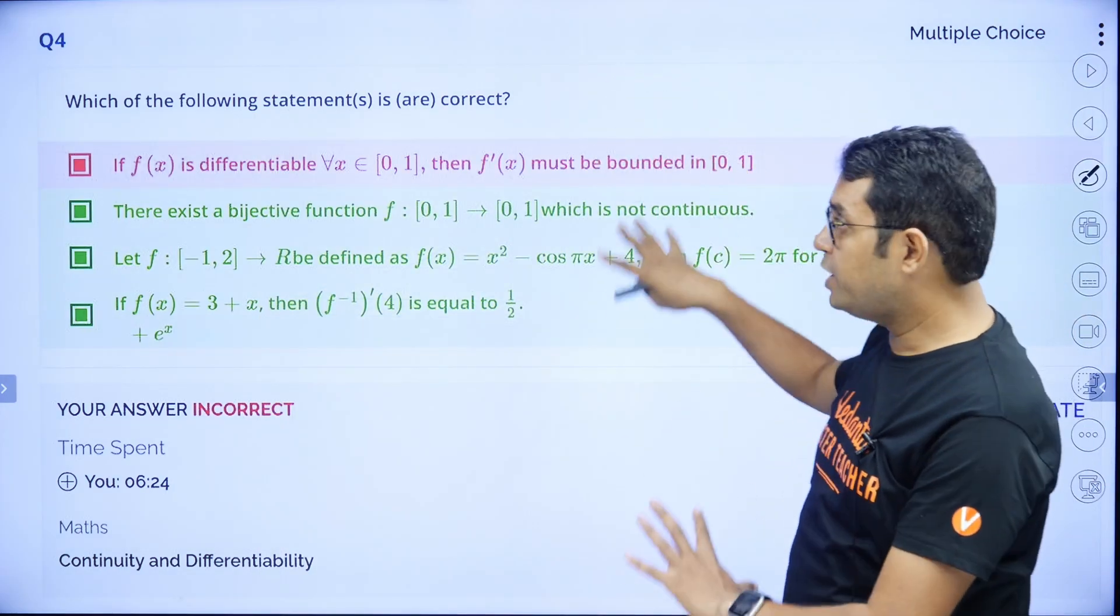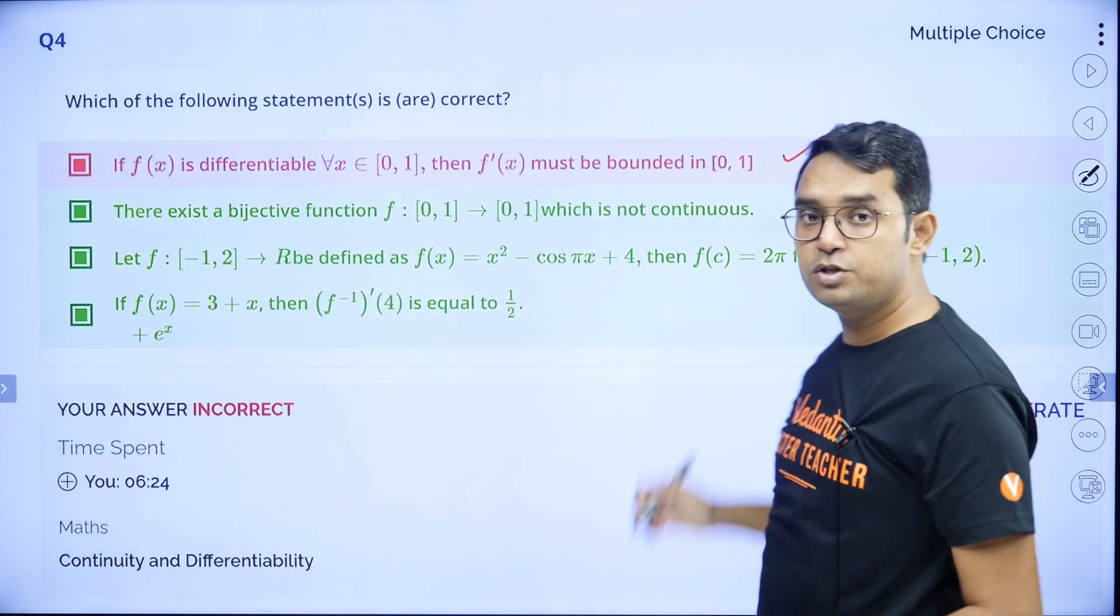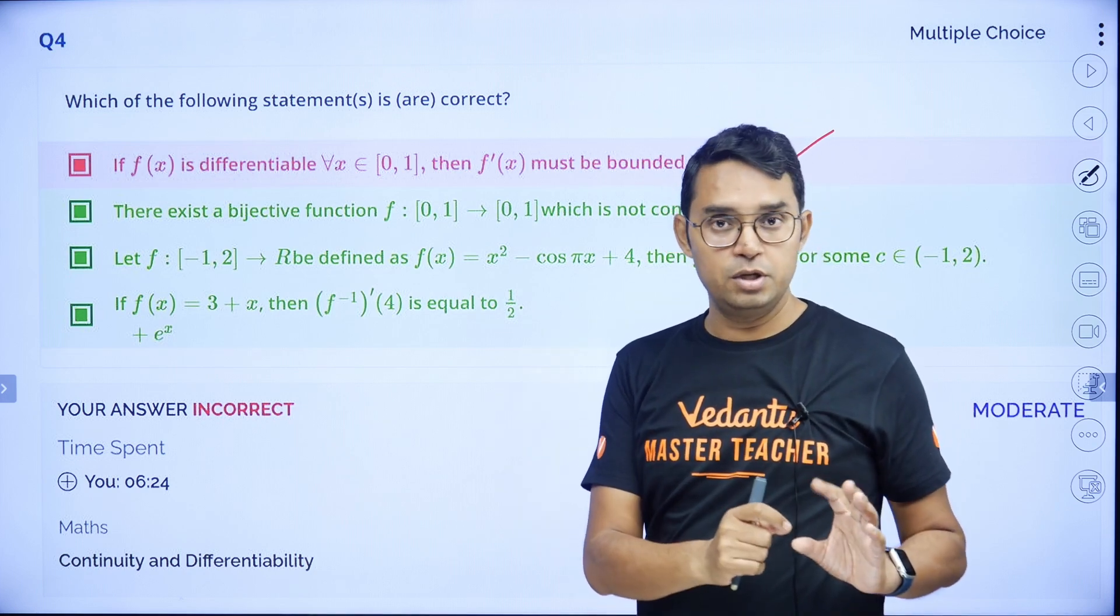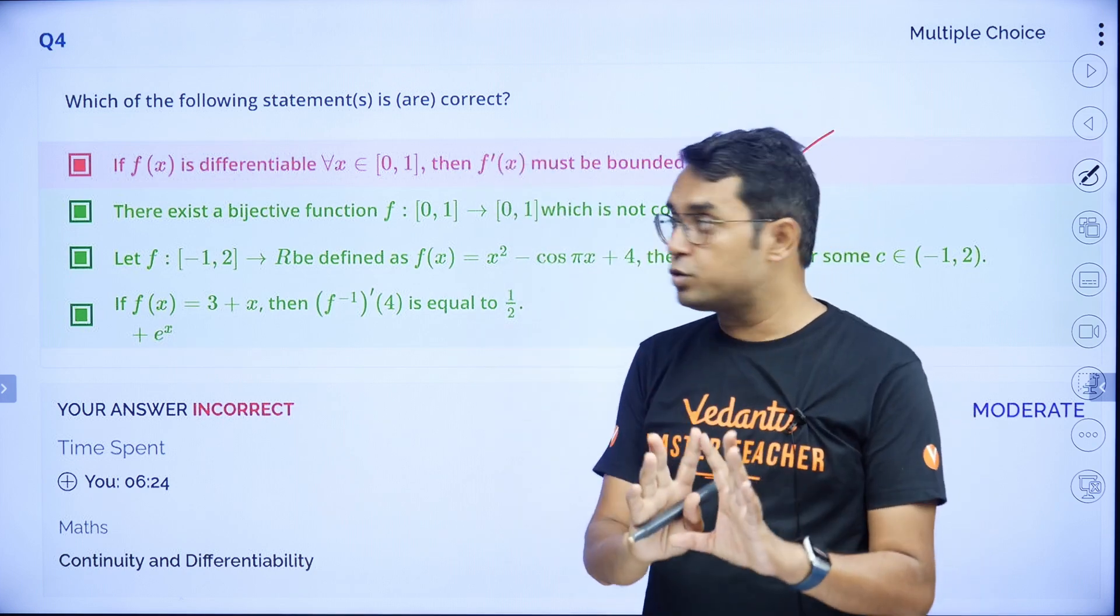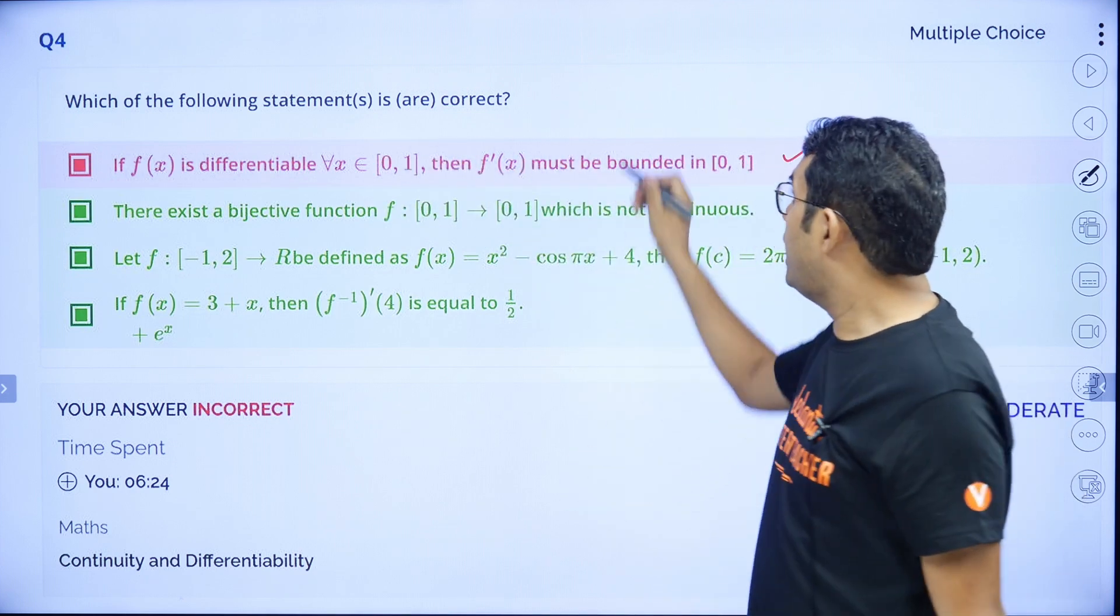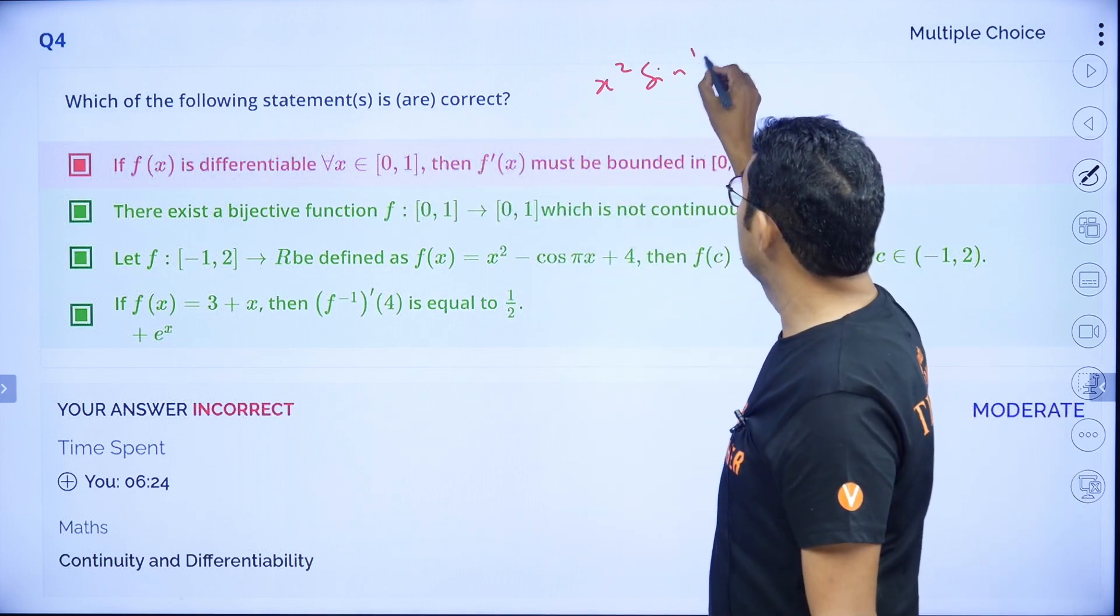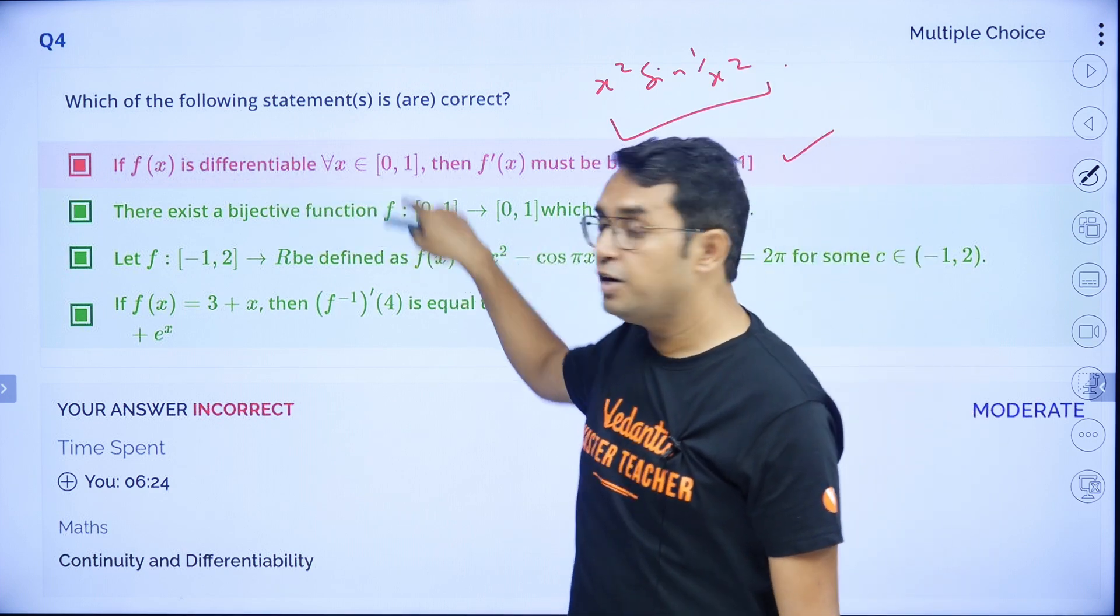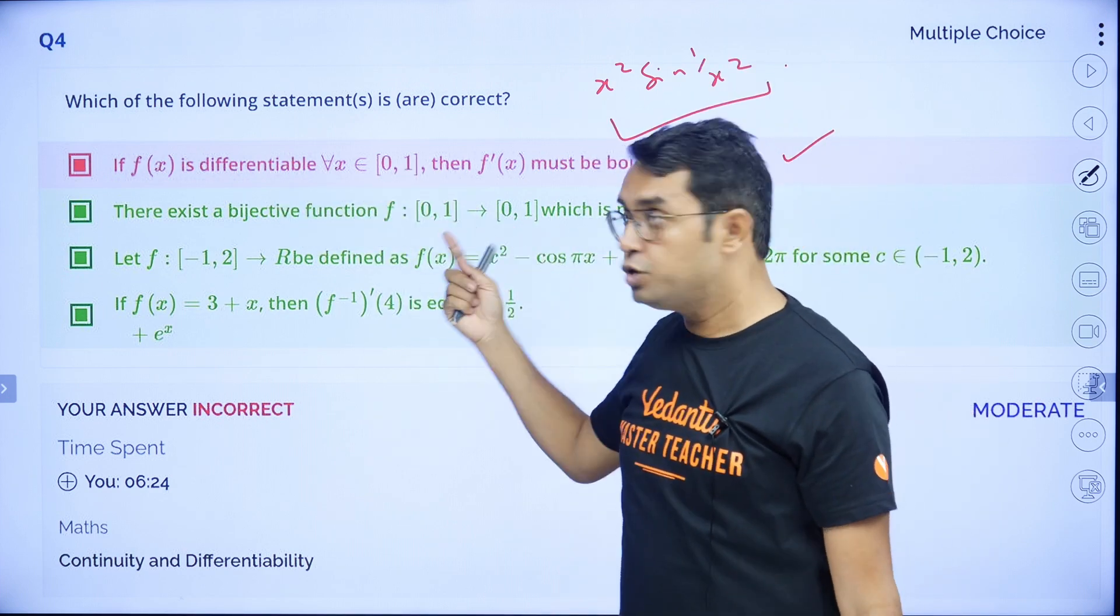I have given you one more question here. This was actually from a Vedantu test conducted in March. Option 1 - please go through it. Here, it looks like this option is correct, which is not. I am giving you an example: x² sin(1/x²).